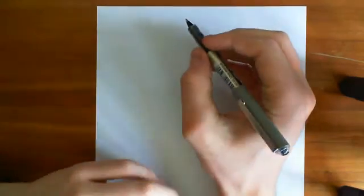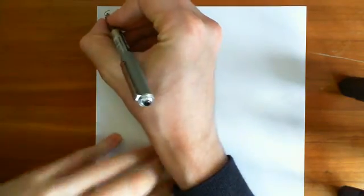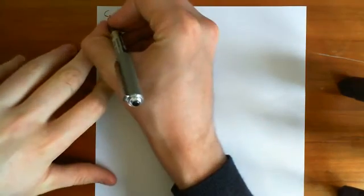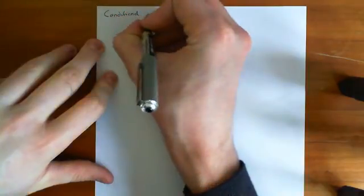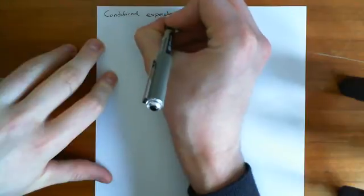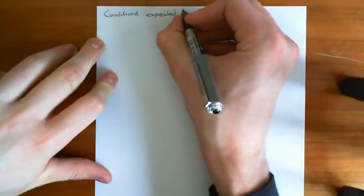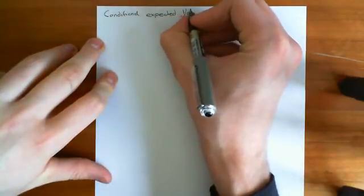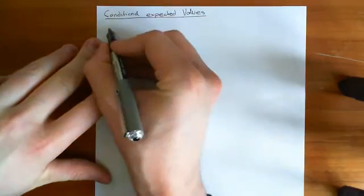Welcome to this next video in the Theory of Probability playlist. In this video, we're going to look at conditional expected values for a continuous random variable — where the random variable that we are taking the conditional expected value of is a continuous random variable rather than a discrete random variable.